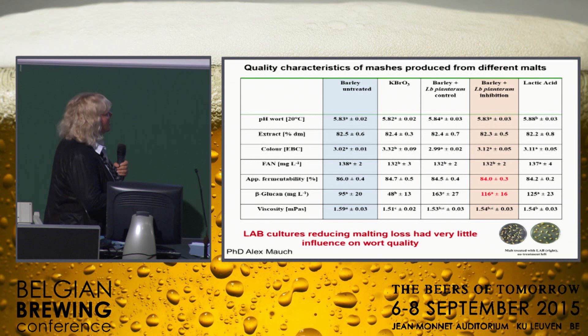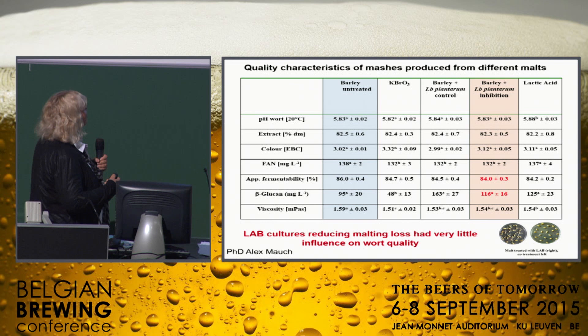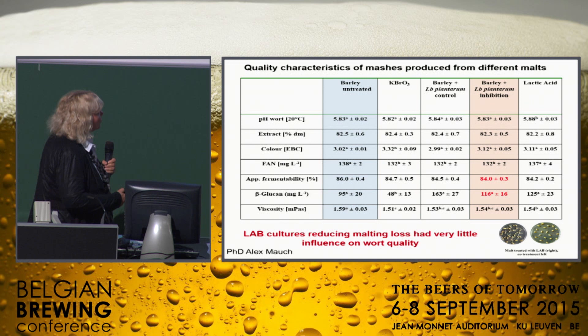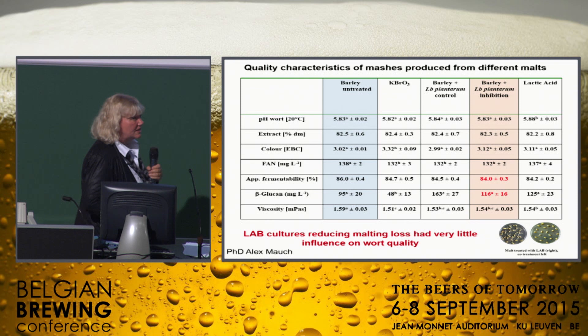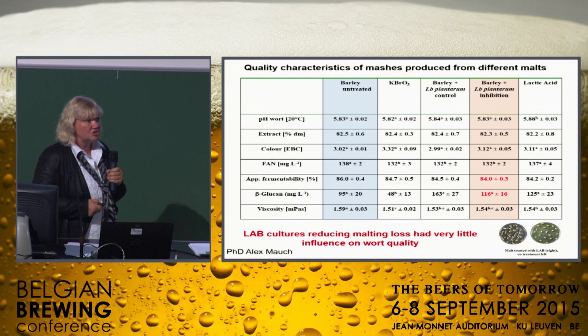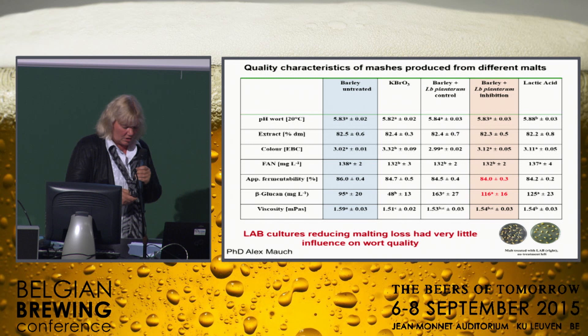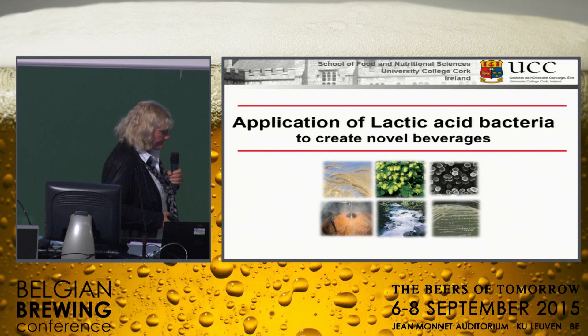We also made beer from it, and here are some of the mash results. What we did find was there was no difference in pH, extract, colour, or FAN, with just a little bit of a difference in fermentability compared to the control. But overall, we could compensate for this by just having a slightly longer alpha-amylase rest — so by slightly changing your mash conditions, you were able to compensate for that small difference.